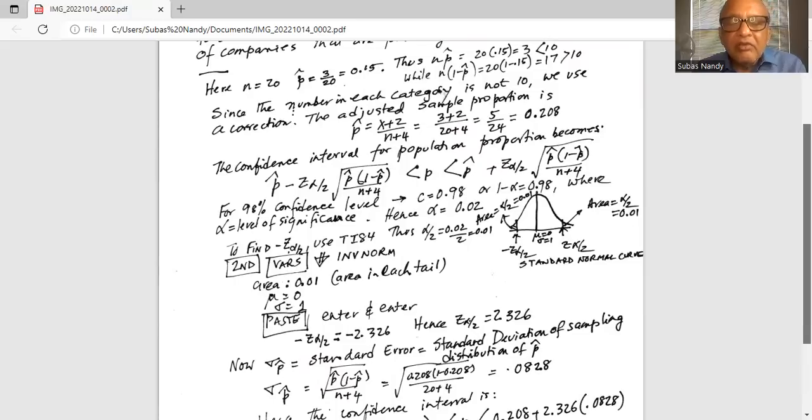The left tail is minus 2.326. Since the standard normal curve is symmetric, the critical value of z on the right tail is positive 2.326, because we are on the right-hand side of the mean, which is at 0 at the center on the horizontal axis.